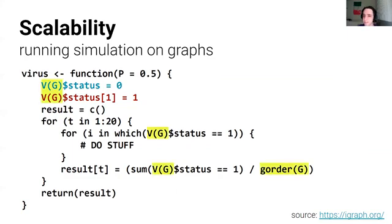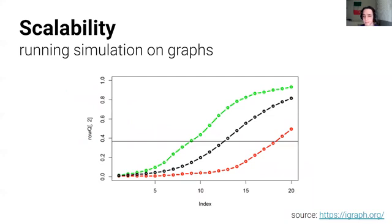Here is an example of how we can use iGraph to simulate and use methods, for example, G-order to help us analyze and build new methods. Here is the graph of the simulation, and here is a 95-degree confidence interval of the time steps and how many vertices have been infected in 20 time steps.